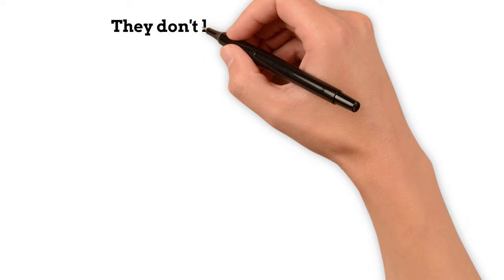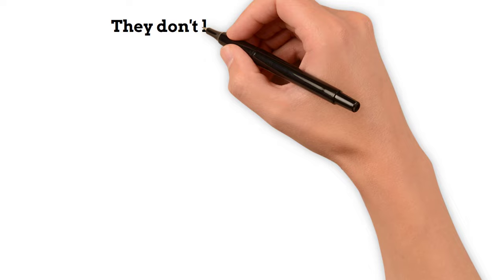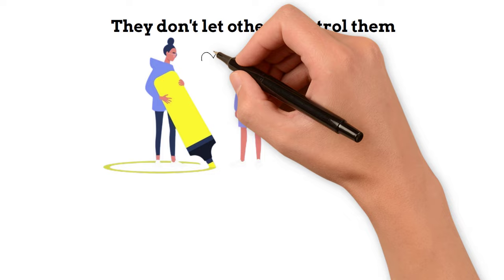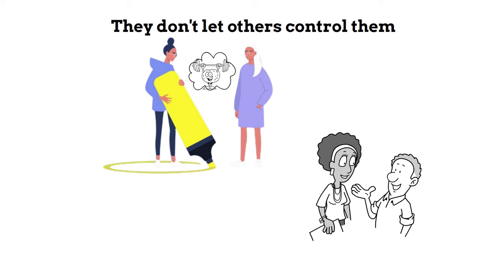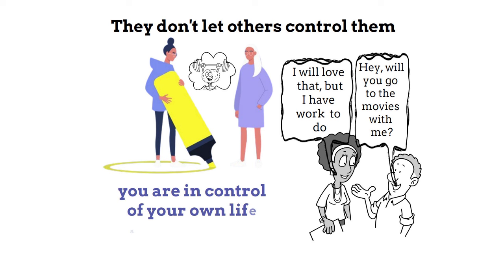Twelve: They don't let others control them. Maintaining boundaries and assertiveness is crucial for mental strength. Practice setting boundaries with others and asserting your needs and opinions in a respectful manner. Remember, you are in control of your own life and well-being.